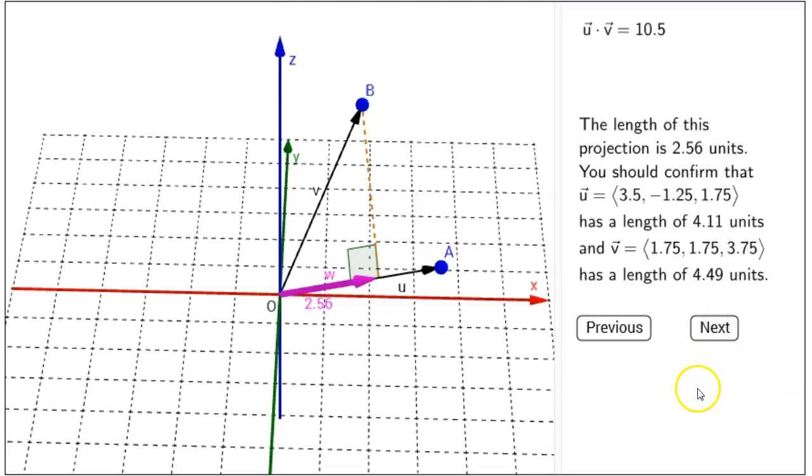Let's take a look at some of these lengths. The length of this projection, that is, the vector W, is 2.56 units. You should confirm that vector U has coordinates (3.5, -1.25, 1.75) and has a length of 4.11 units. You can also confirm that vector V has coordinates (1.75, 1.75, 3.75) and has a length of 4.49 units.